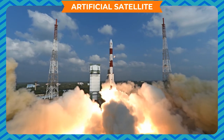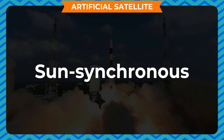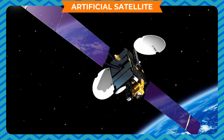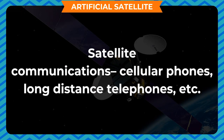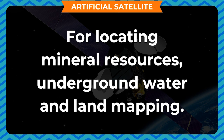An artificial satellite may either be geostationary, earth-synchronous or sun-synchronous. Artificial satellites have various uses like weather forecasting, satellite communications, cellular phones, long distance telephones, television and radio transmission, locating mineral resources, underground water and land mapping, and collecting information about other planets.